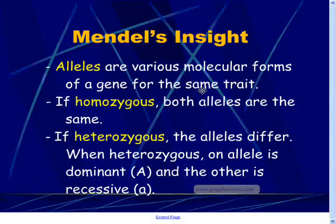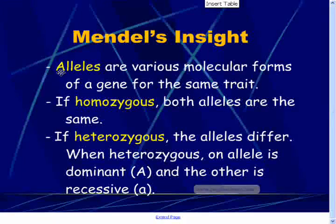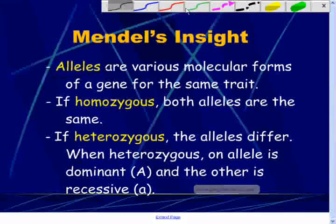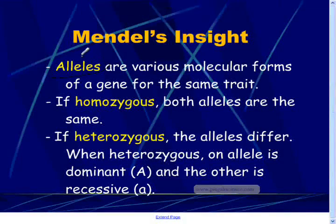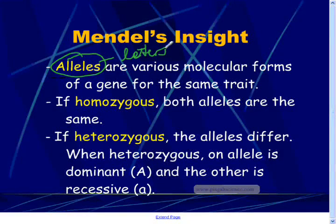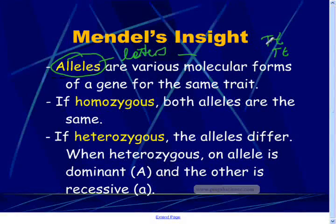There are a couple of important vocabulary words you probably need to be familiar with. The first one is allele. Allele refers to the various molecular forms of a gene for the same trait. When you see the word allele, you need to think letters. Some of you may have had genetics in high school and seen things like capital T, lowercase t, or capital T, capital T. These letters are alleles.